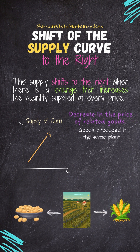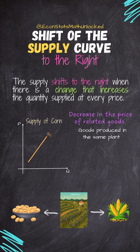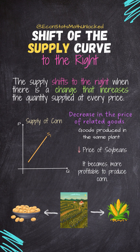Another factor is a decrease in the price of related goods or services. It becomes less profitable to supply the other good or service. Resources shift to this good, increasing its supply and shifting the curve to the right.